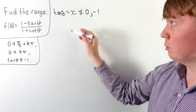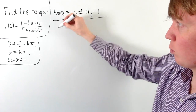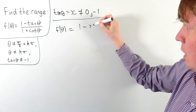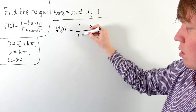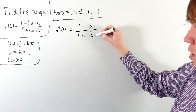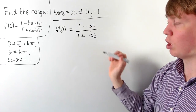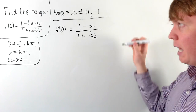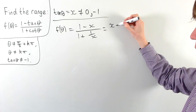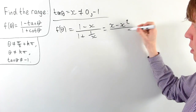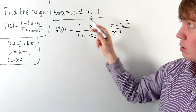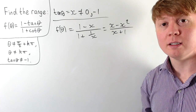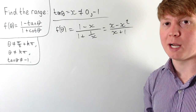Now we can write the whole function in terms of x. We have f(θ), replacing tan theta by x, written as 1 - x in the numerator. In the denominator, using the fact that cot is the reciprocal of tan, we write this as 1/x. Then we multiply numerator and denominator by x — which is valid since x can't be zero — to get the nicer expression (x - x²) / (x + 1).